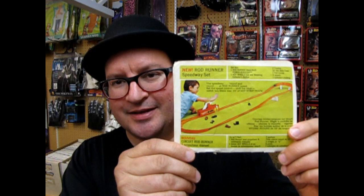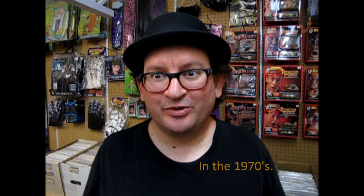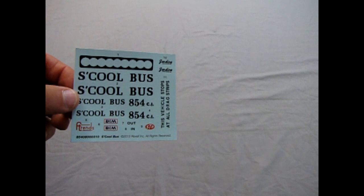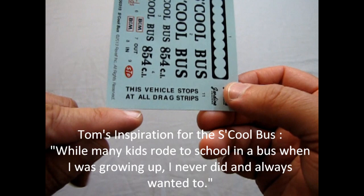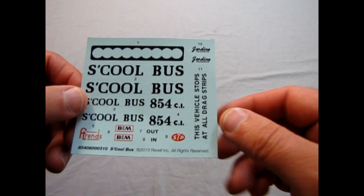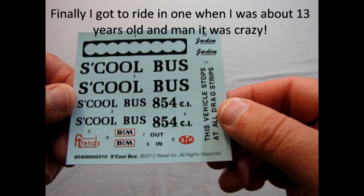Now back to the review. Next up we will look at the decal sheet. Here we have the school bus decal sheet and please note that this vehicle stops at all drag strips. And of course it is 840 cubic inches, which is cool.